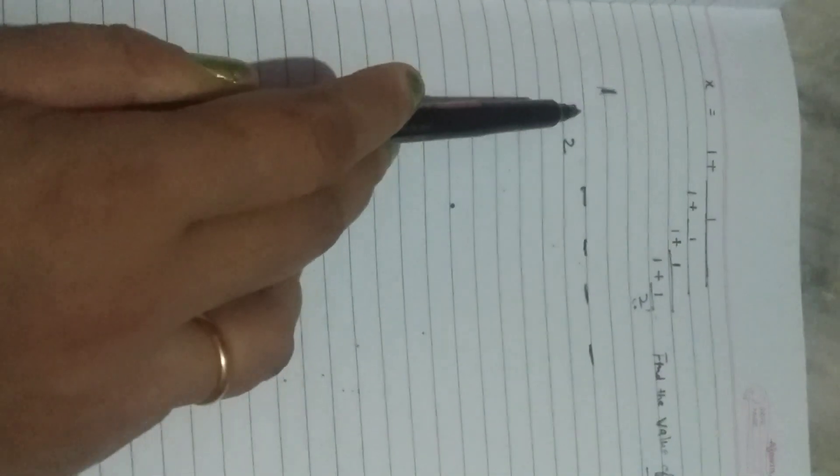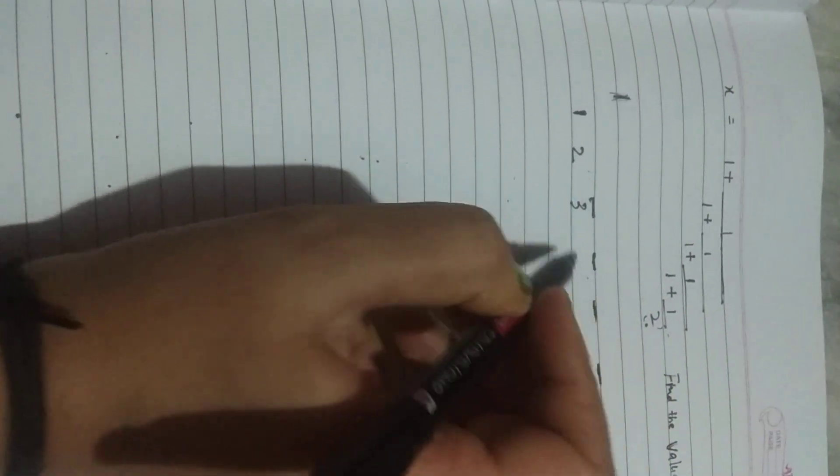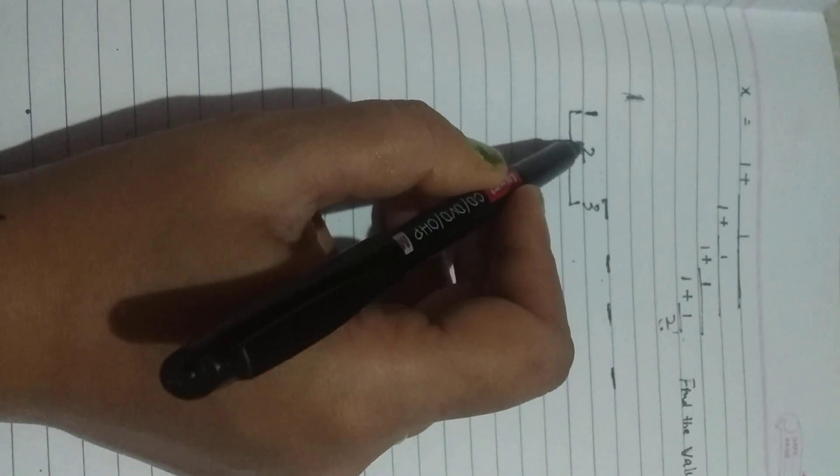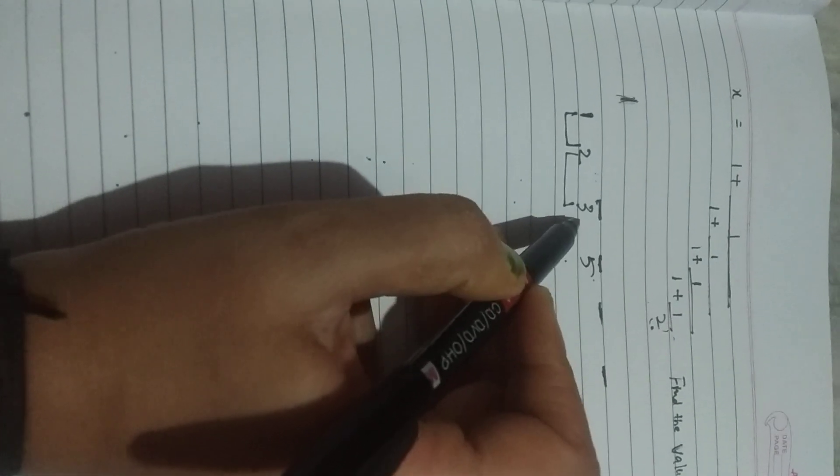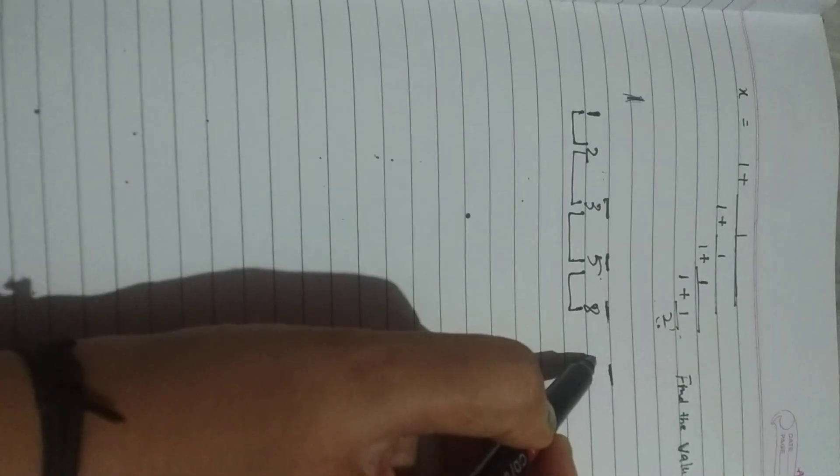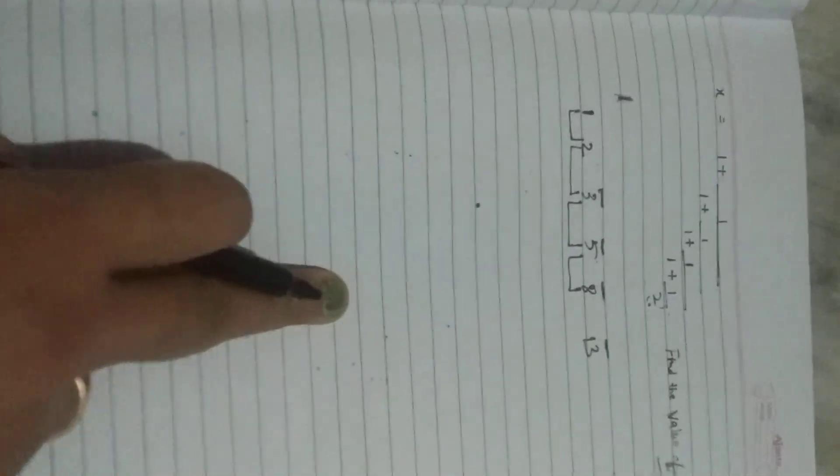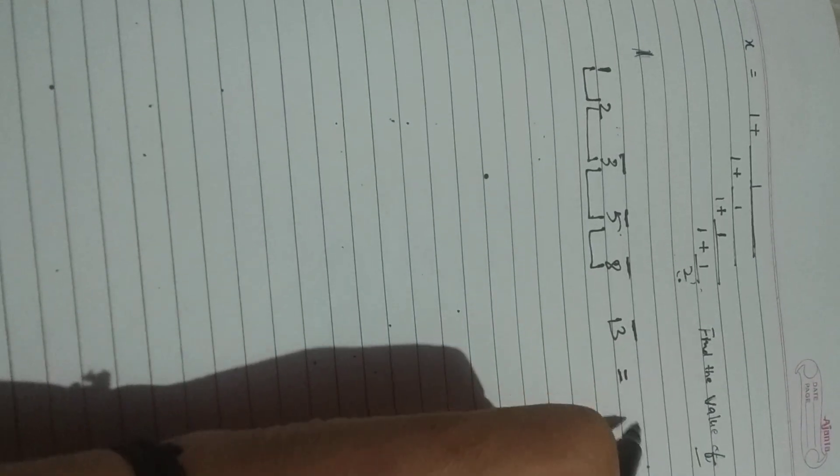First 2 terms will add to give 3. Then these 2 terms will add up to give 5. Then these 2 terms will add up to give 8. Then 5 plus 8 is 13. So the answer would be, the x value would be 13/8.